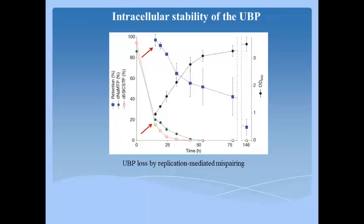As the culture entered stationary phase and the triphosphate decomposed completely, plasmid loss began to compete with replication. But even then, retention of unnatural base pair remained at approximately 45% and 15% at days 3 and 6 respectively. Moreover, when the unnatural base pair was lost, it was replaced by DADT, and the shape of the retention versus time curve mirrors that of the growth versus time curve.